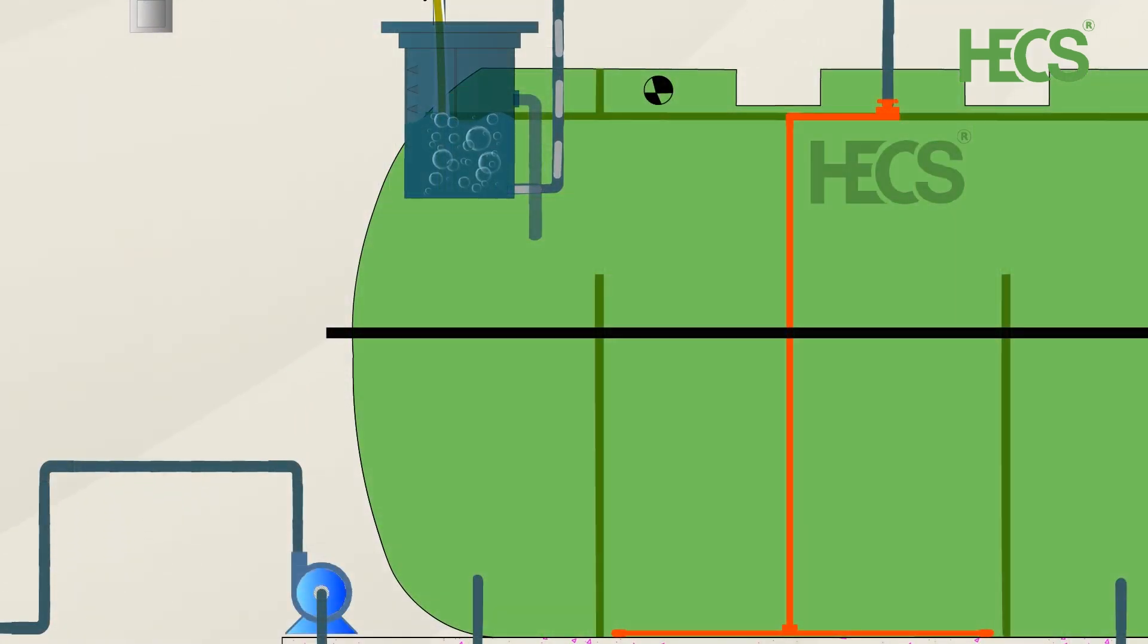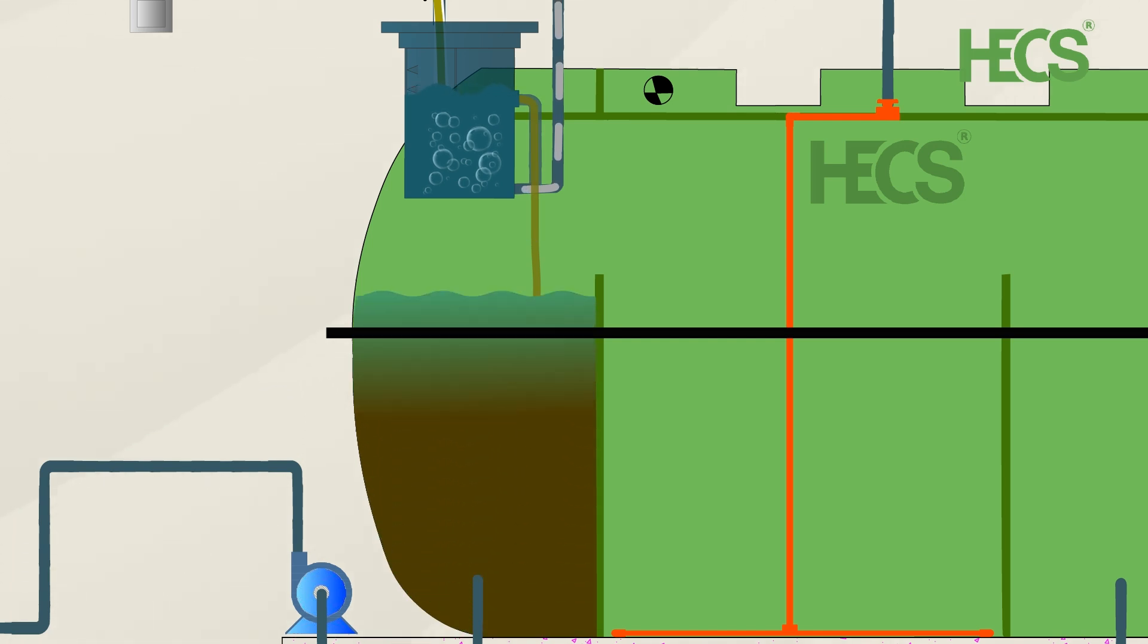The effluent then overflows into the second chamber, the sedimentation chamber, where the heavy particles, i.e. sludge, settle down at the bottom of this chamber, clarifying the water as it progresses to the next stage.